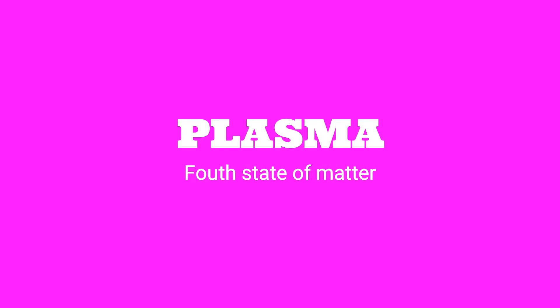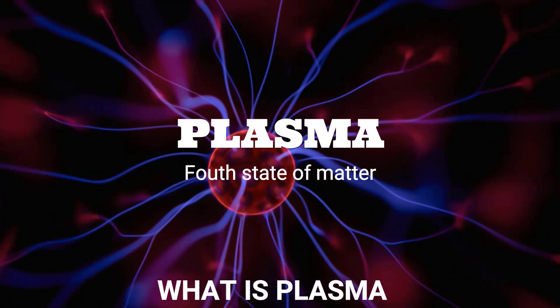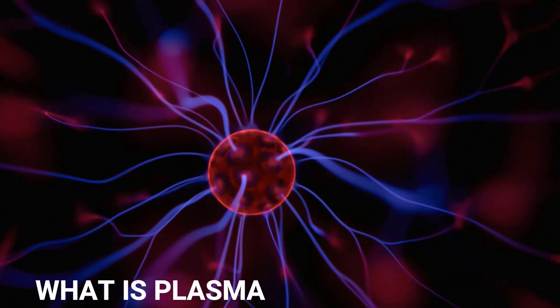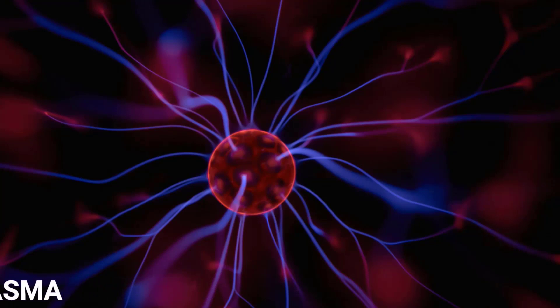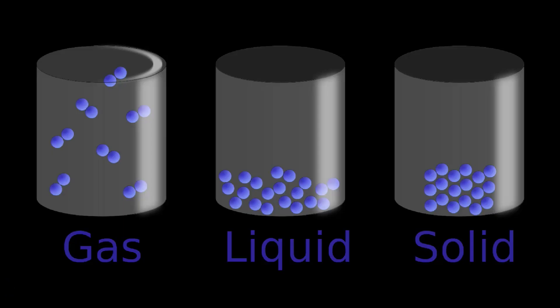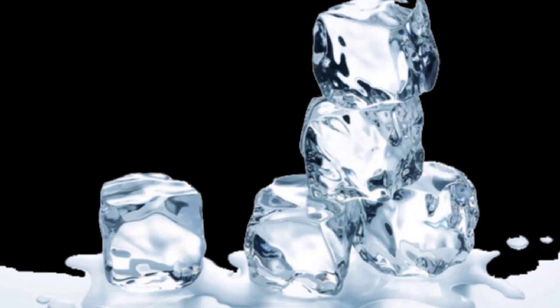I promised to treat plasma separately as a state of matter because of its uniqueness and application in the area of illumination. Plasma is the fourth state of matter. We have already treated liquid, solid, and gas — so just after gas is plasma. Recall that all these states of matter are capable of existing in more than one state.